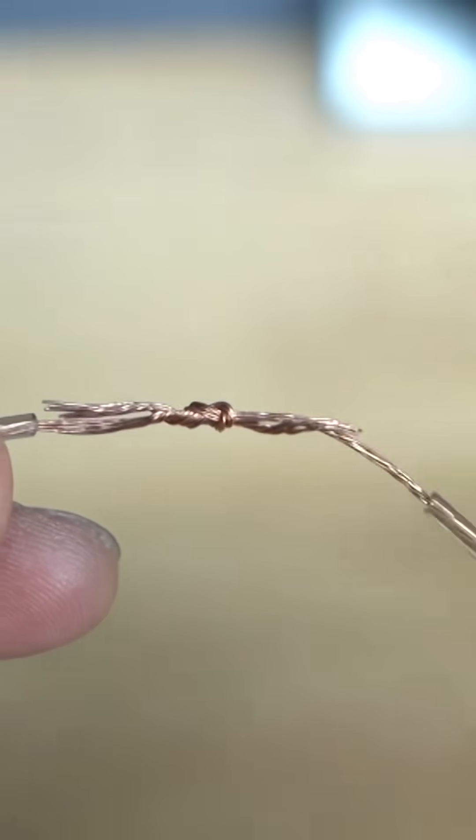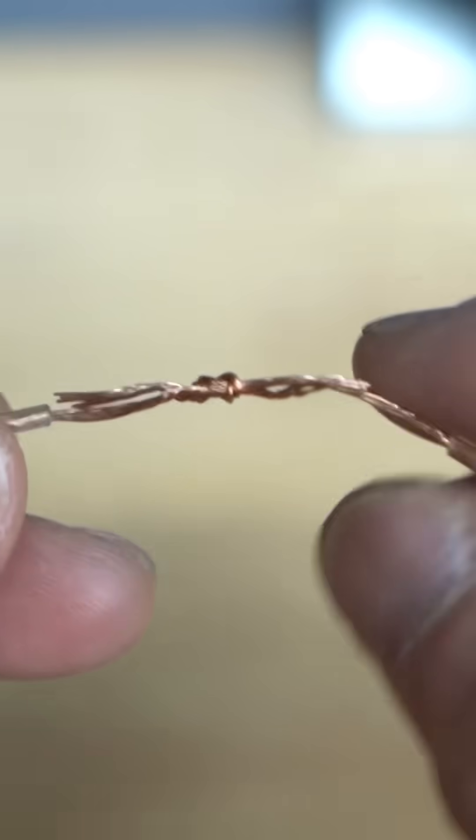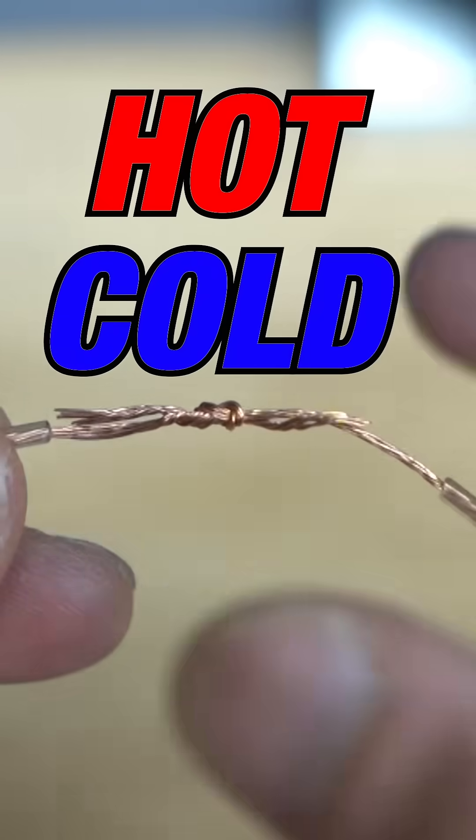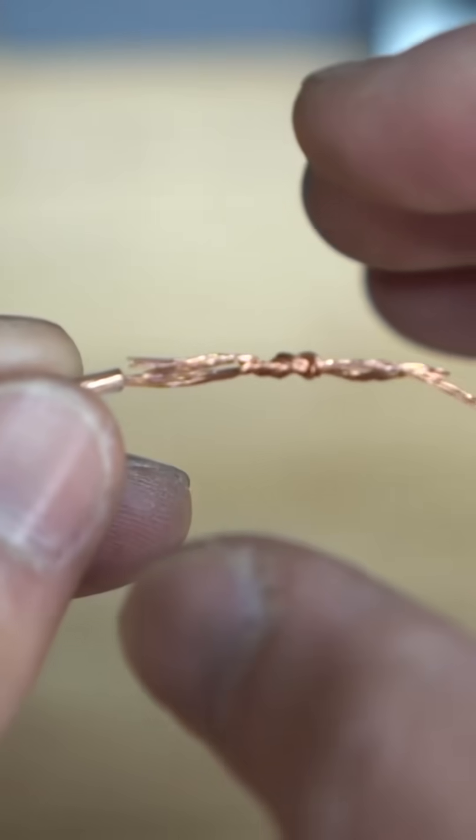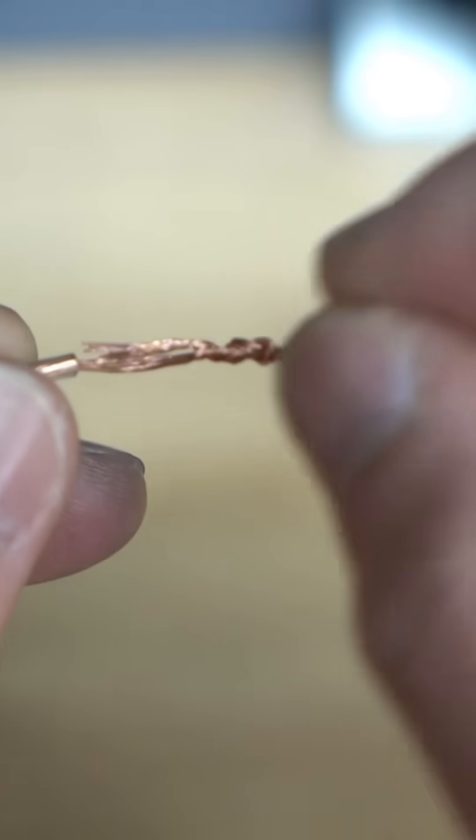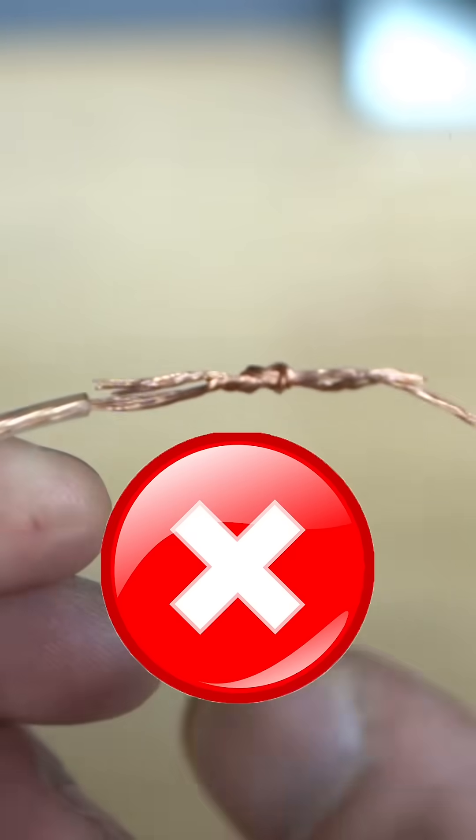The problem with this method is once electricity starts passing through here it goes on a hot cold hot cold, expands and it contracts, and over time this knot right here pretty much gets loose and could possibly create an arc in there. This is just not a reliable way to do it.